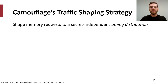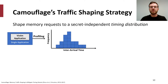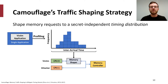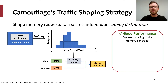A state-of-the-art traffic shaping approach is found in Camouflage. Camouflage's strategy is to shape memory requests to a secret-independent timing distribution by delaying real requests and issuing fake requests. First, one measures the timing distribution of inter-arrival times of the victim's memory requests during an offline phase, and then shapes requests to the secret-independent distribution during an online phase. This is an interesting approach since it allows for dynamic sharing of the memory controller, allowing for contention between co-running applications rather than enforcing strict isolation, as in fixed service.